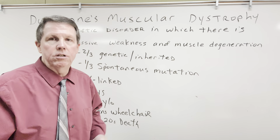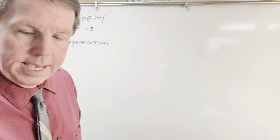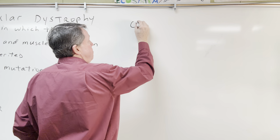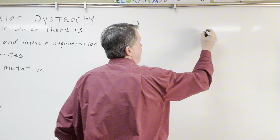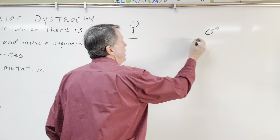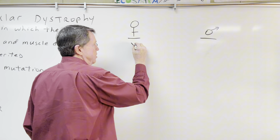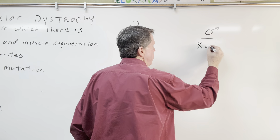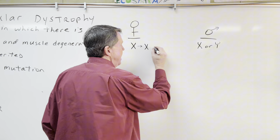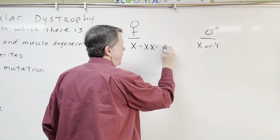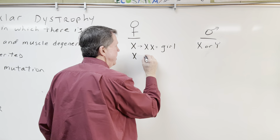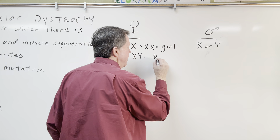So how do we get Duchenne's muscular dystrophy? Let's look at what we mean by X-linked. You have a mom and a dad. Females can only donate an X chromosome. Dads can donate an X or a Y. If mom donates an X and dad donates an X, you end up with a girl. If mom donates an X and dad donates a Y, you end up with a boy.